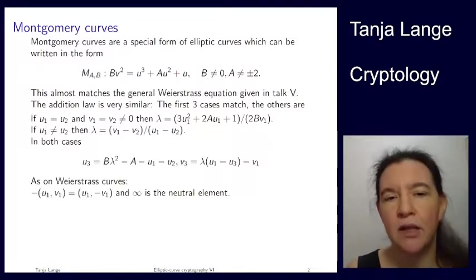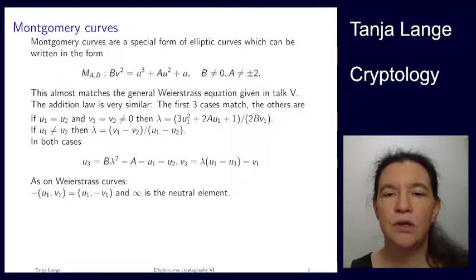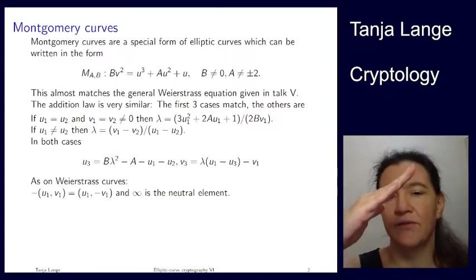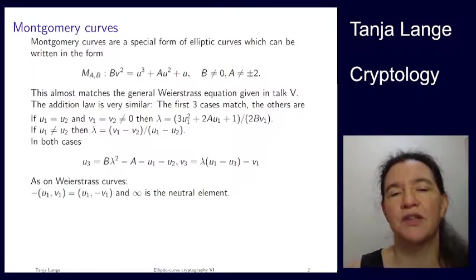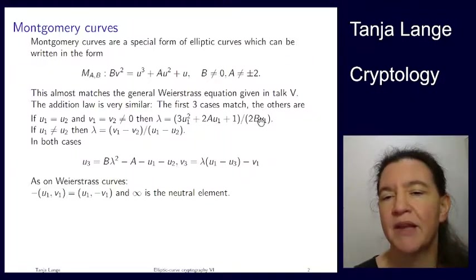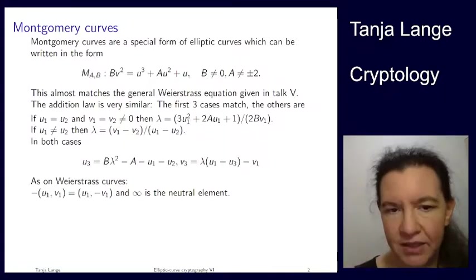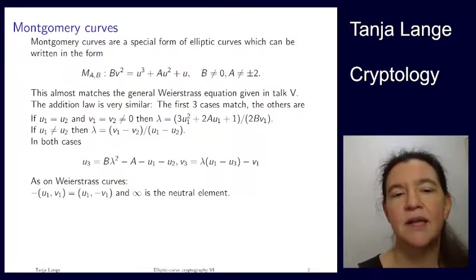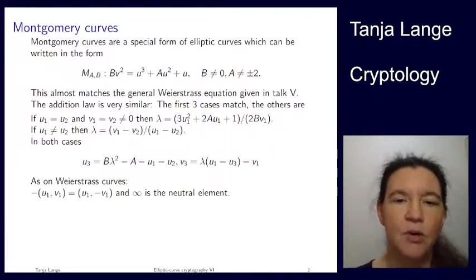The other two cases change a little bit. For doubling, it's again the chord-and-tangent method where, to double a point, we need to compute the slope at the curve, find the third point of intersection, and then mirror it. The slope involves partial differentiation with respect to u and v, and the derivative with respect to v now has an extra term. For the slope in the case that the two points are different — not each other's negative and not the same — the slope is just as in the Weierstrass case. But when you put the points together to get the resulting coordinates, there is an extra factor b and an extra term minus a.